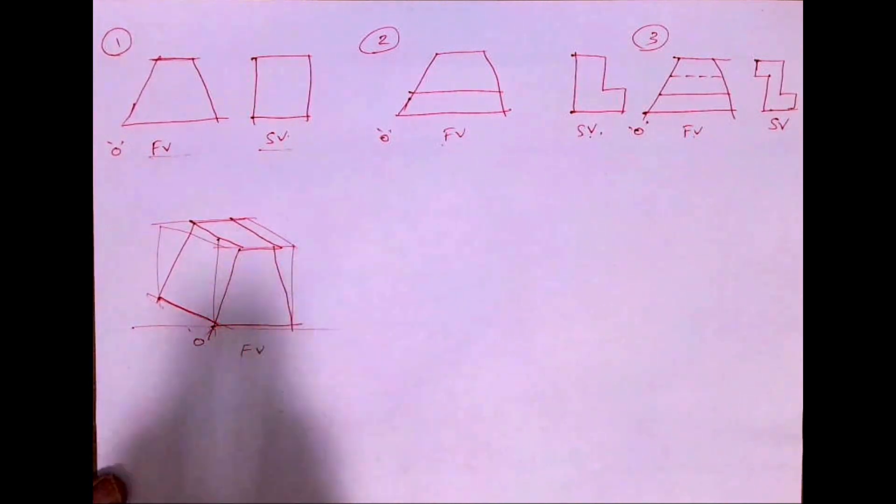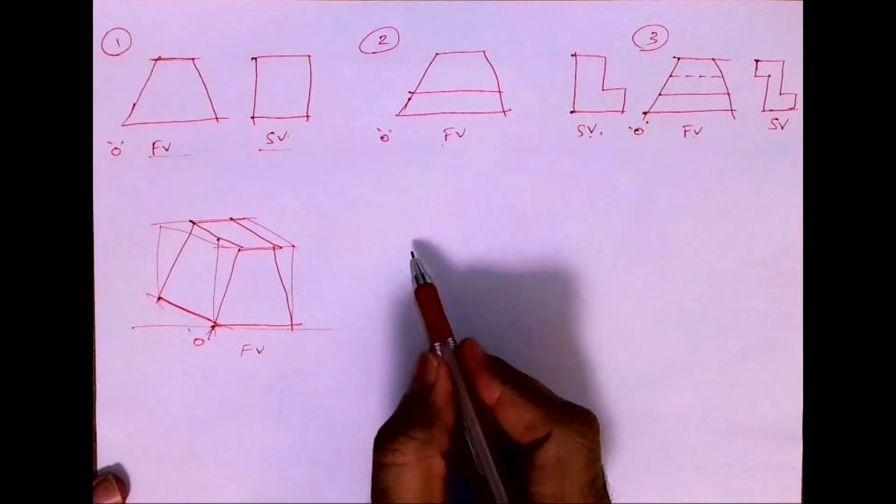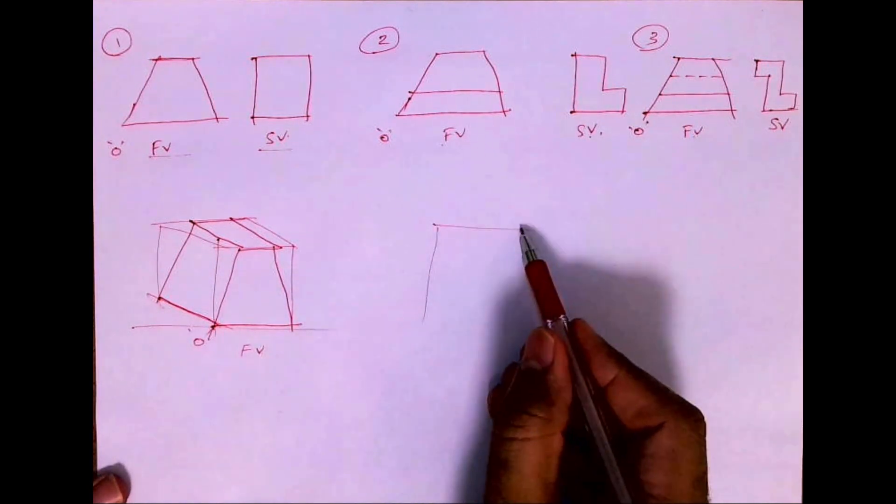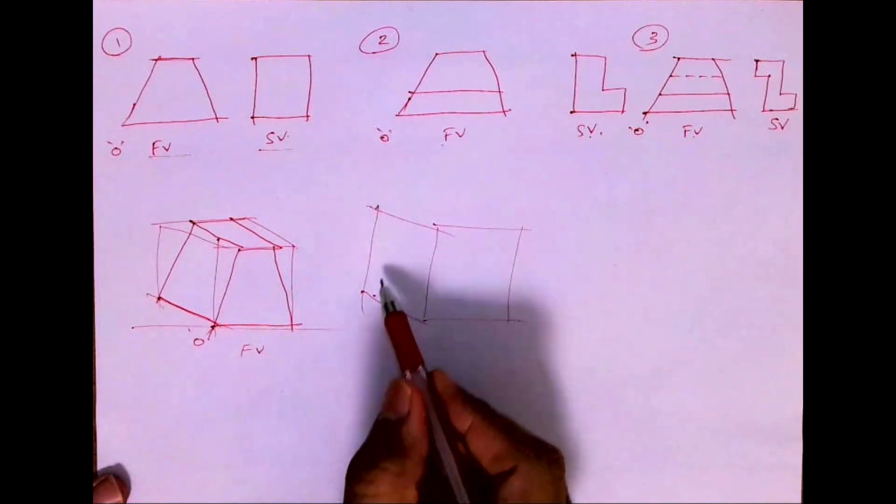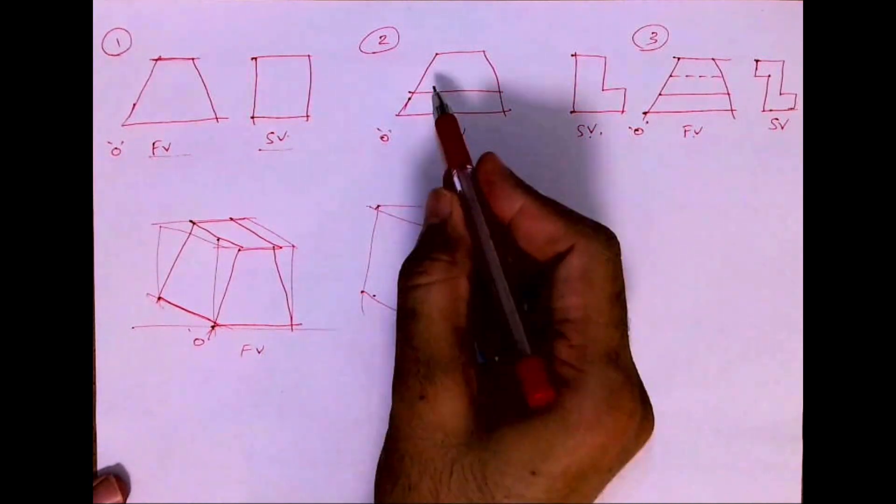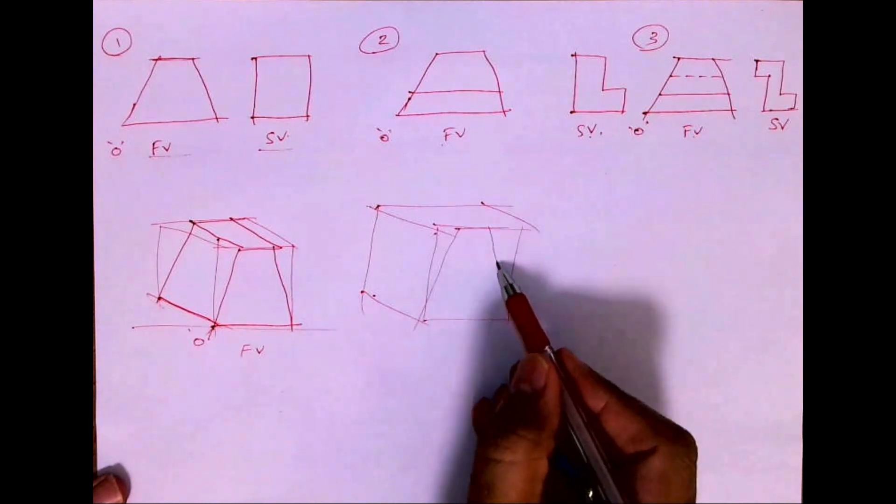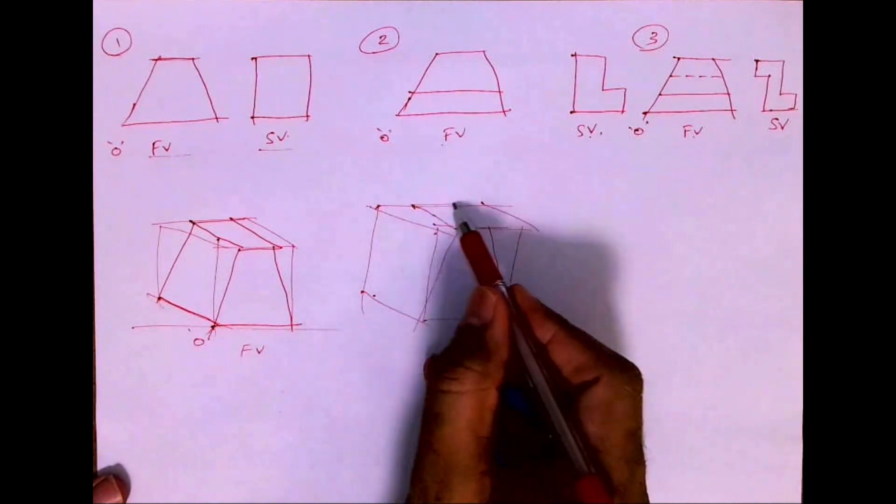If you see the first sum and second sum, what is the difference? There is a line. Again, you will draw a box. The basic concept remains the same: slope. Always draw the slope first. So I will draw a slope.